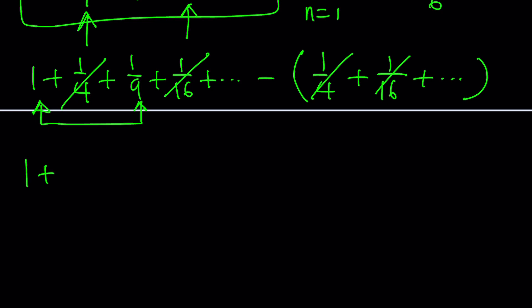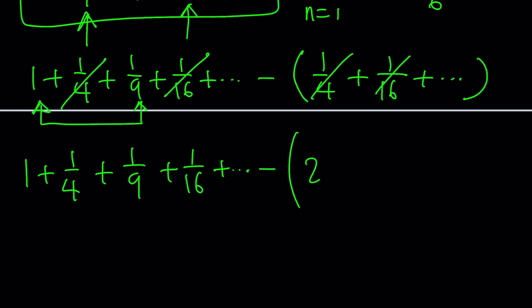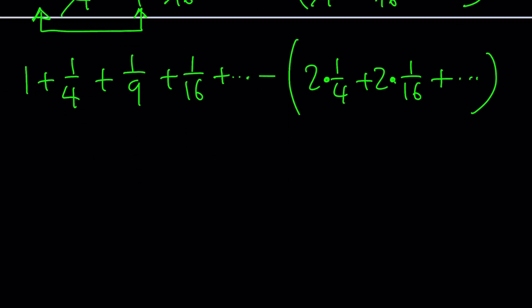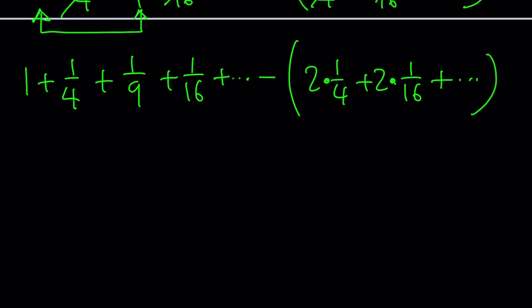In other words, if you take the Basel sum and subtract 2 times 1/4 plus 2 times 1/16, and so on — you subtract the even terms twice — you get what you're looking for. Because 1/4 minus 2 times 1/4 is negative 1/4, and 1/16 minus 2 times 1/16 is negative 1/16. It's like x minus 2x equals negative x: subtracting 2x turns x into negative x.